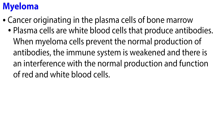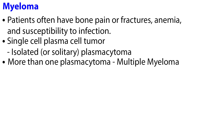Myeloma is a cancer originating in the plasma cells of bone marrow. Plasma cells are white blood cells that produce antibodies. When myeloma cells prevent the normal production of antibodies, the immune system is weakened, interfering with the normal production and function of red and white blood cells. Patients often have bone pain or fractures, anemia, and susceptibility to infection. A single plasma cell tumor is called an isolated or solitary plasmacytoma, and more than one is called multiple myeloma.